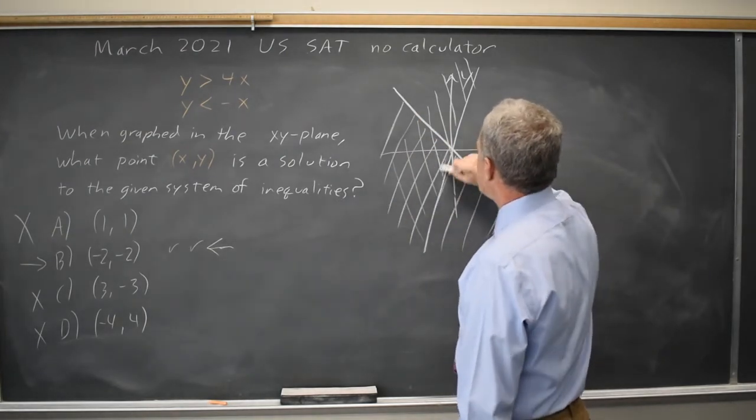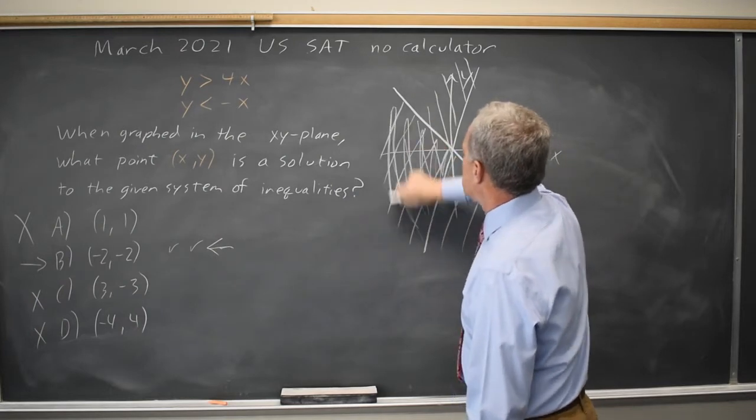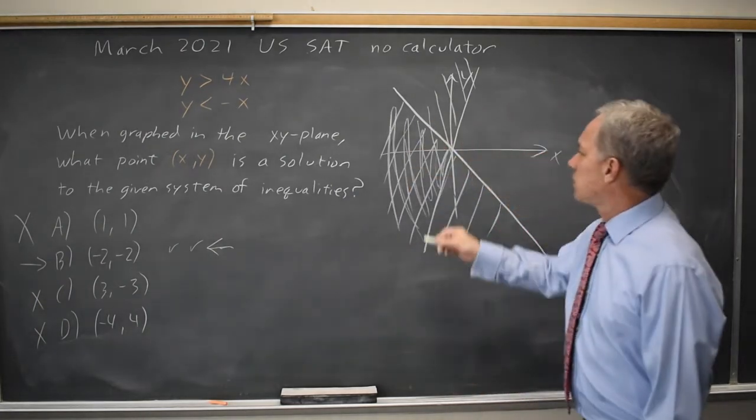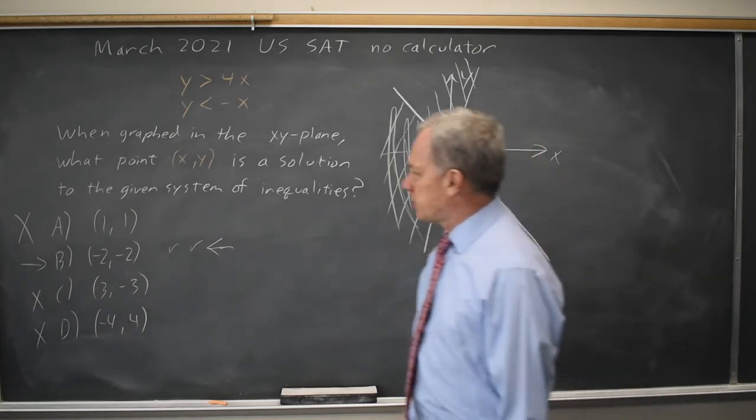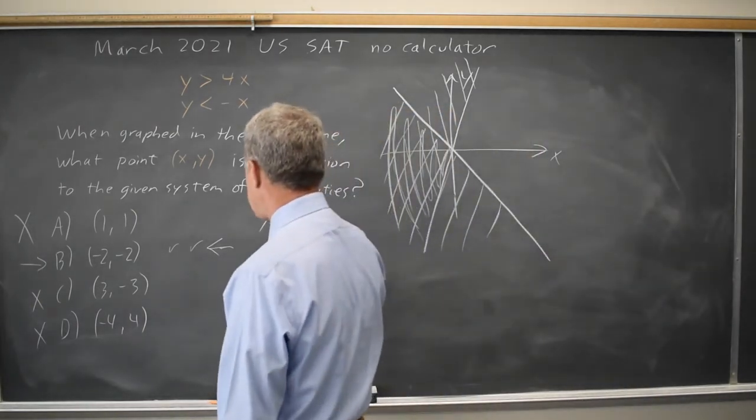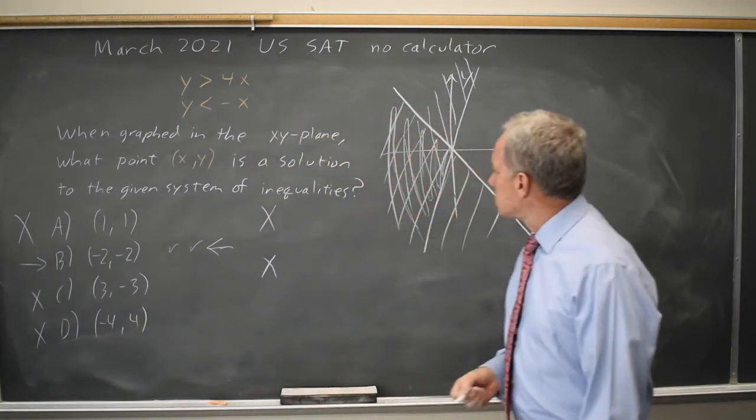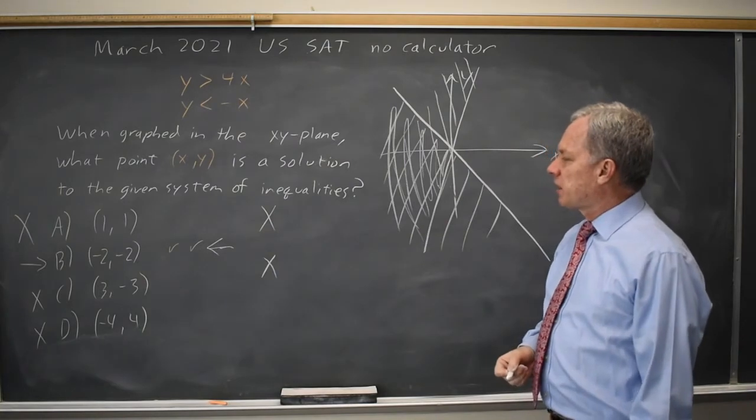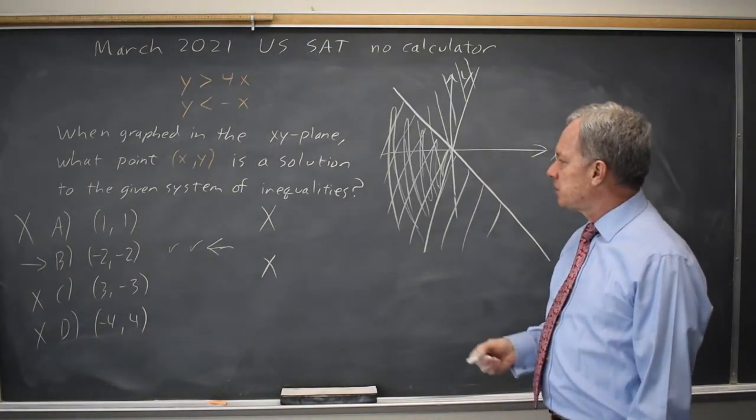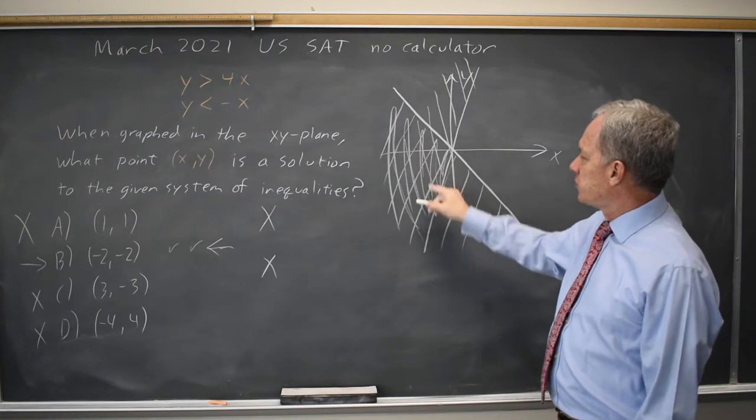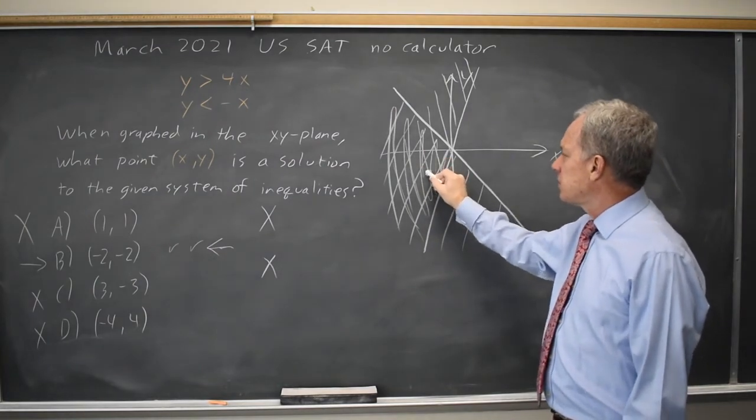The area that was shaded both times is over here. So that is, X has to be negative. I just ruled out choices A and C.